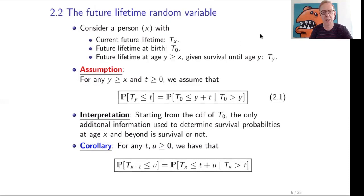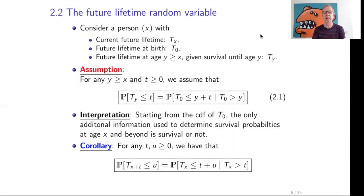Consider again a person aged x with future lifetime Tx. When he was born at age zero, his remaining lifetime was T0. If he survives until age y, his remaining lifetime then is the random variable Ty. The question is: what is the relation between the distributions of Ty, Tx, and T0?